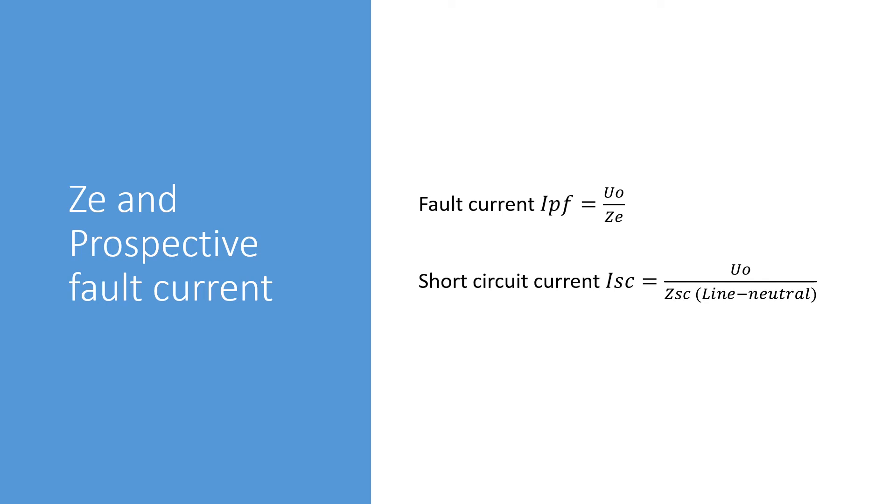So on the slide we can see the formula for the fault current which is UO divided by ZE or if the consumer unit is fed by a distribution circuit it would be UO divided by ZDB. So ZDB being the ZS for the distribution circuit. And then the formula for short circuit current is UO divided by ZSC which is line to neutral.